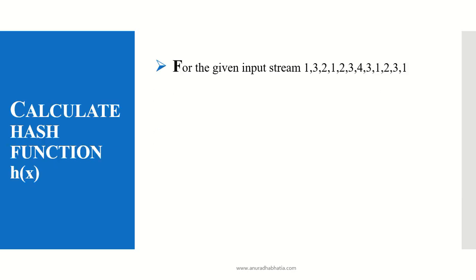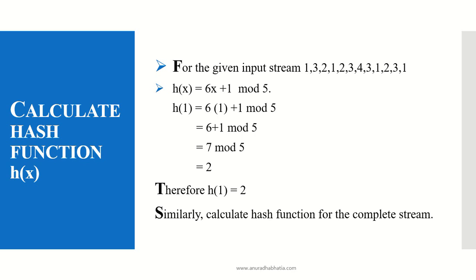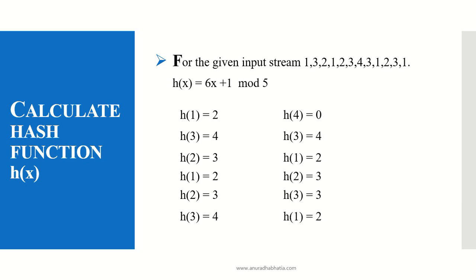Now how to calculate the hash function? For the given input stream with hash function 6x + 1 mod 5, we will start substituting the input stream bit by bit. For h(1), 6(1) + 1 mod 5 equals 7 mod 5, and the output is 2. We all know that mod gives us the remainder. So the hash function for input stream 1 is calculated and the answer is 2. Therefore h(1) = 2. Similarly we calculate the hash function for the complete input stream and get these results.